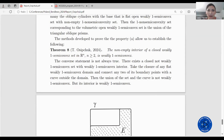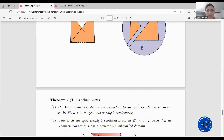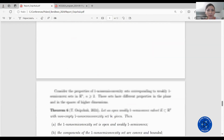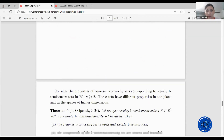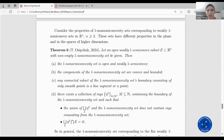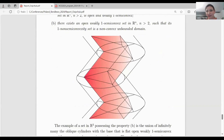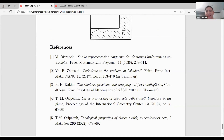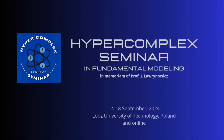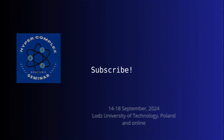As you could see, the theorems were proved only for open weakly one semi-convex sets. I have not yet investigated the case of closed weakly one semi-convex sets. Here you can see the references. Thank you very much for your attention.